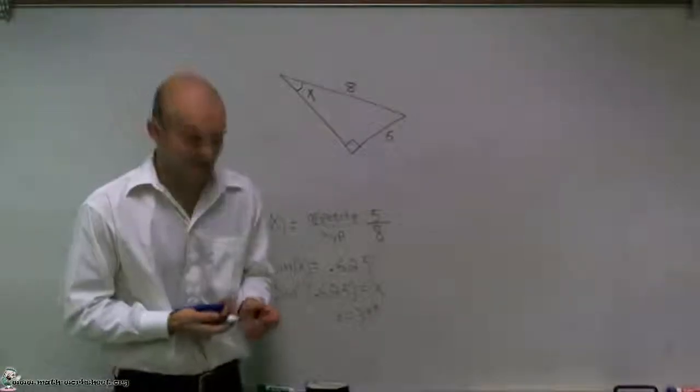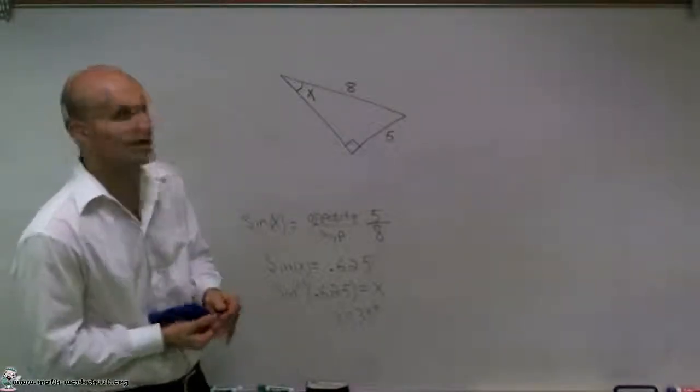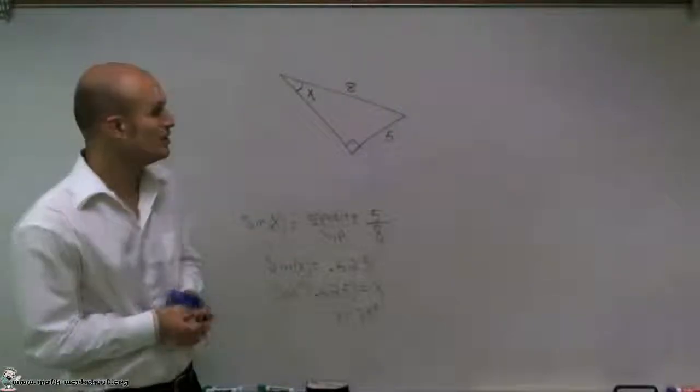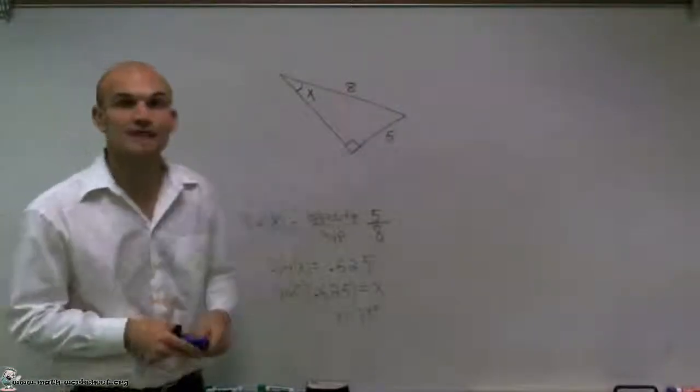So that's how you find the missing angle measurement when given a right triangle and two side lengths. Thanks.